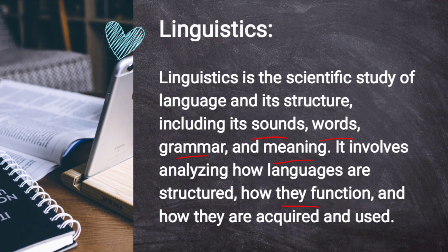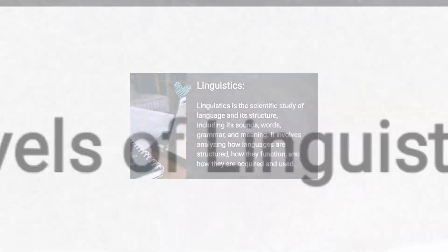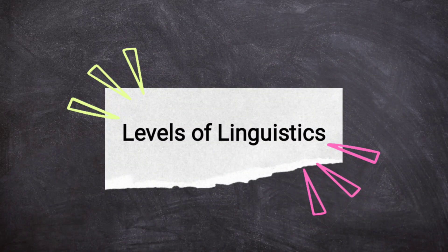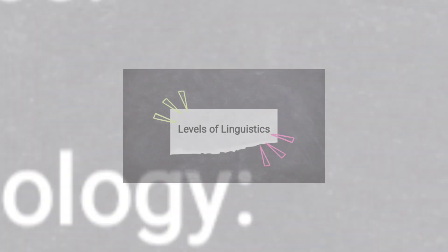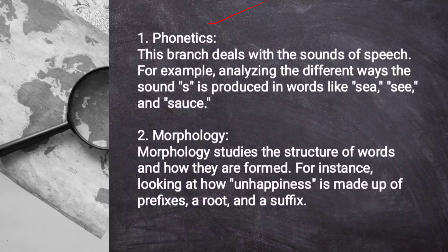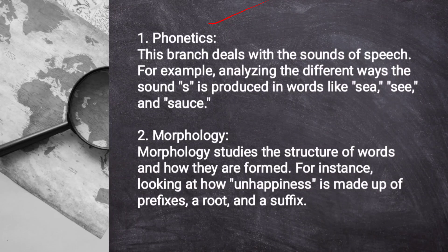Now, the levels of linguistics. There are five levels of linguistics. The first one is phonetics, or phonology. This branch deals with the sounds of speech. For example, analyzing the different ways the sound 's' is produced in different words.